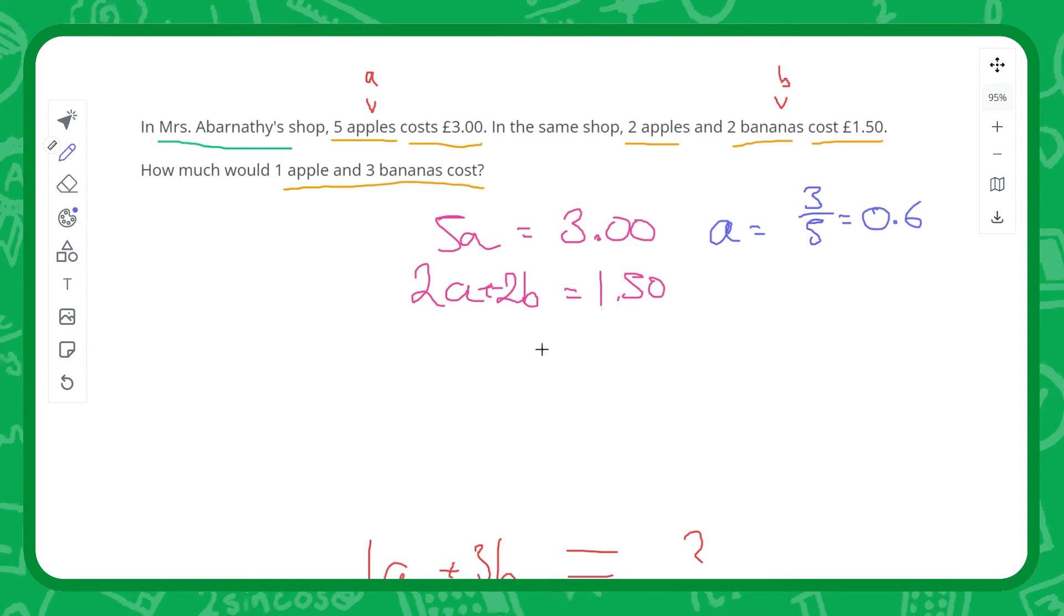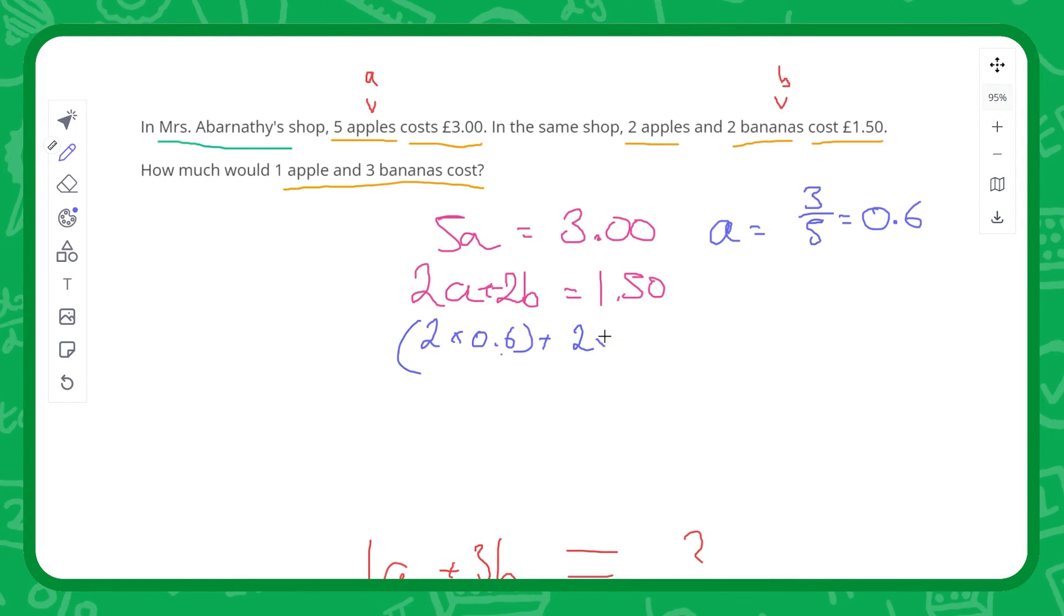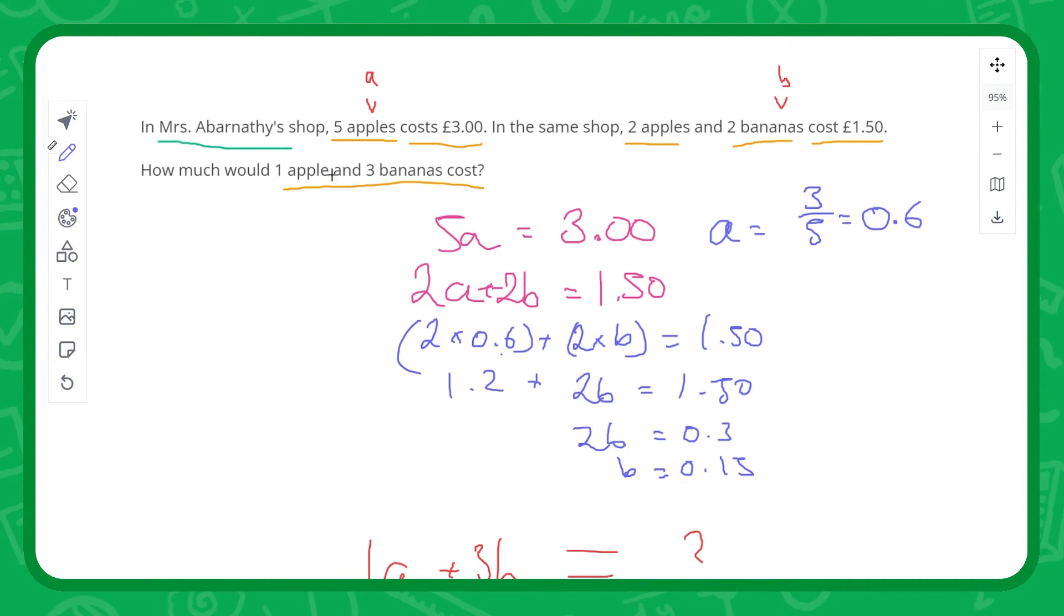Then we can substitute that down here, so we know what one apple costs, and now for bananas we'd say that, well, we know what a is, so 2a, so 2 times 0.6 plus 2 multiplied by the banana one is going to be equal to 1.50. At this point that means we've got 1.2 plus 2b equals 1.50, so that means that 2b is equal to 0.3, so b is equal to 0.15, so 15p.